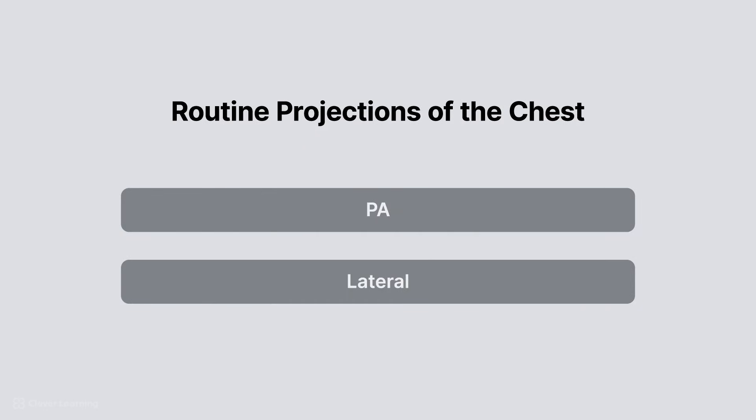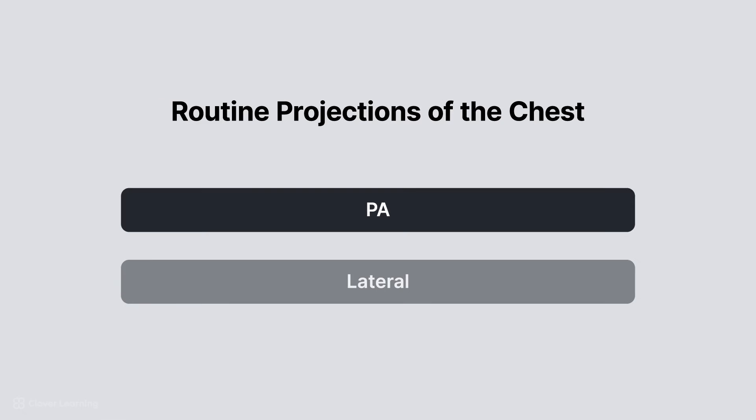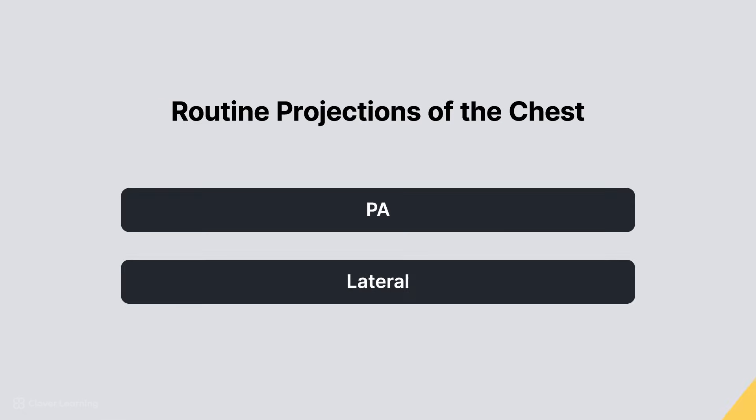As a reminder, the routine radiographic projections of the chest are PA and lateral.